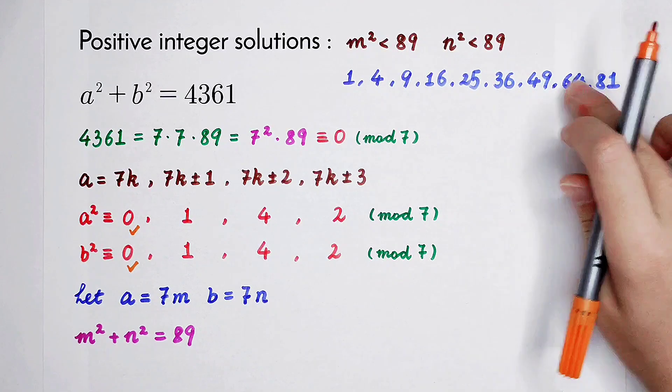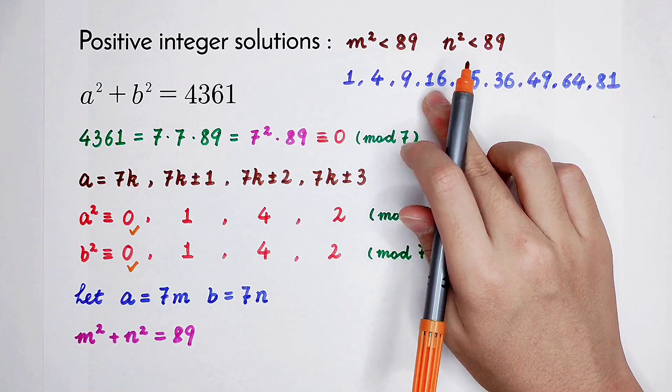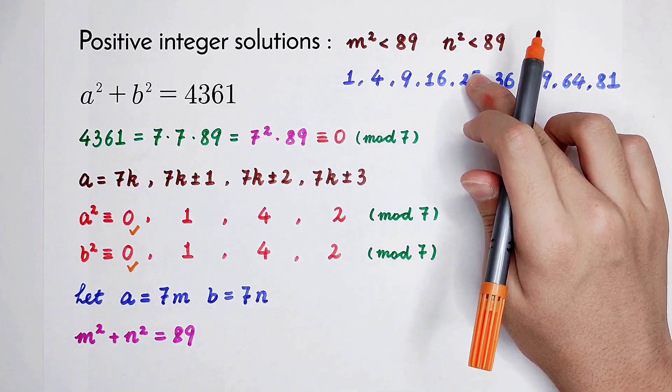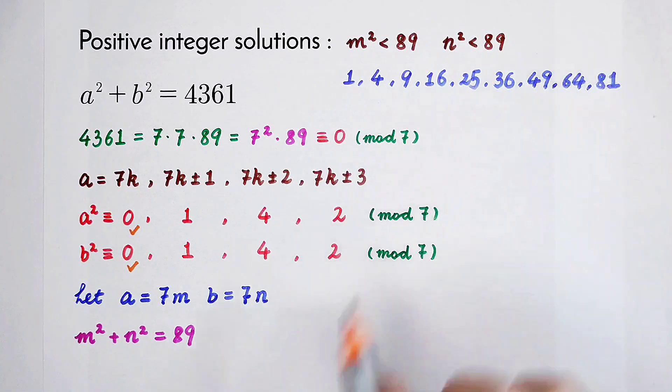If the largest number of m squared and n squared is 64, then 64 plus 1? No. Plus 4? No. Plus 9? No. Plus 16? No. Plus 25? You can find out that 25 plus 64 is 89.